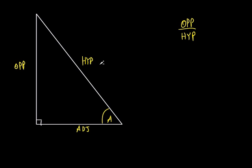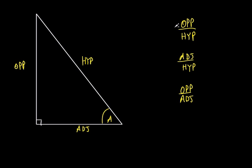The second ratio is the adjacent over the hypotenuse, and the third is opposite over adjacent. These are my three ratios. These three ratios are so common and so important that they actually have their own names. If I compare the opposite to the hypotenuse, it's so common that we give it a name — and this is called the sine of the angle.